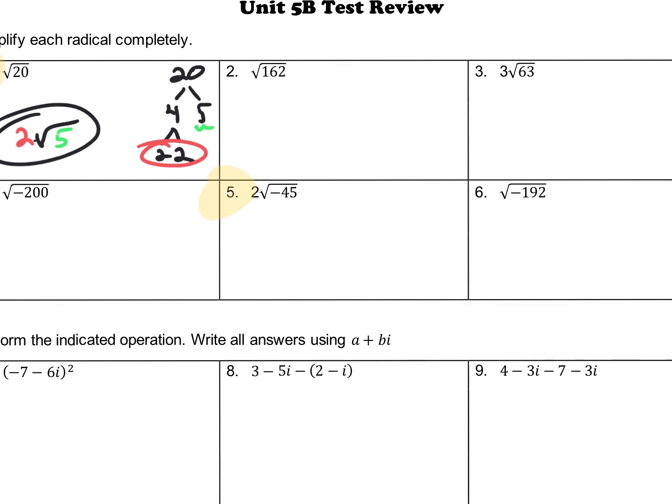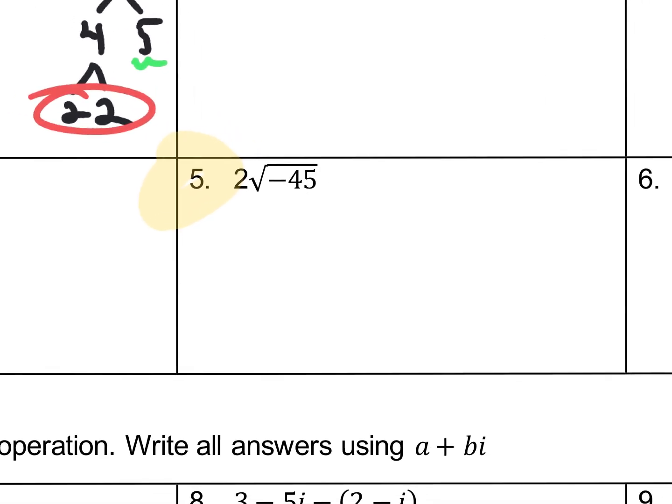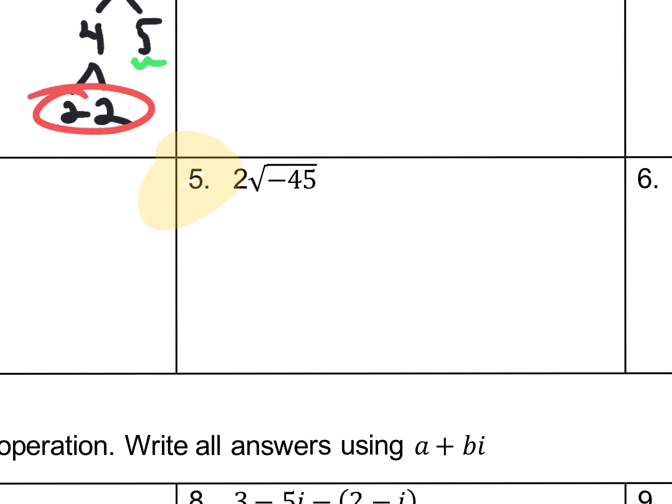All right, and now let's take a look at number 5. Okay, first thing to notice in number 5 is that we have this negative inside the radicals, so we know that an i is coming out because we could rewrite this as 2 times the square root of negative 1 times the square root of 45. Well, the square root of negative 1 is what we call i, so we already know it's 2i square root 45. But now we need to simplify the square root of 45.